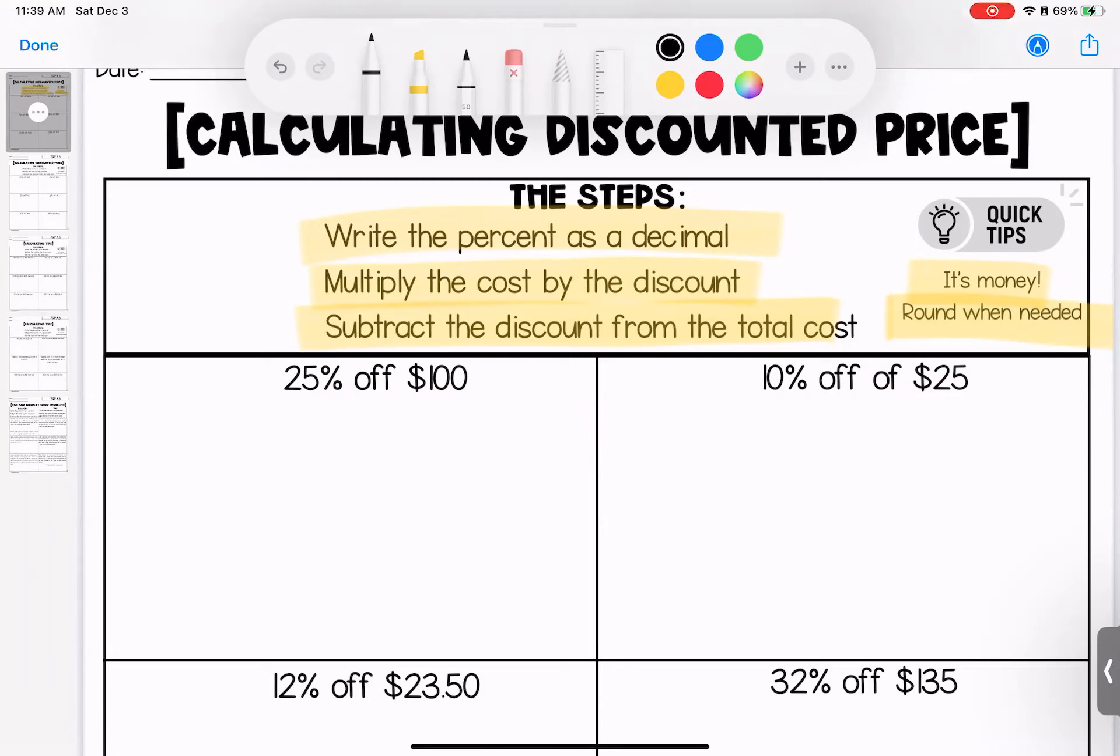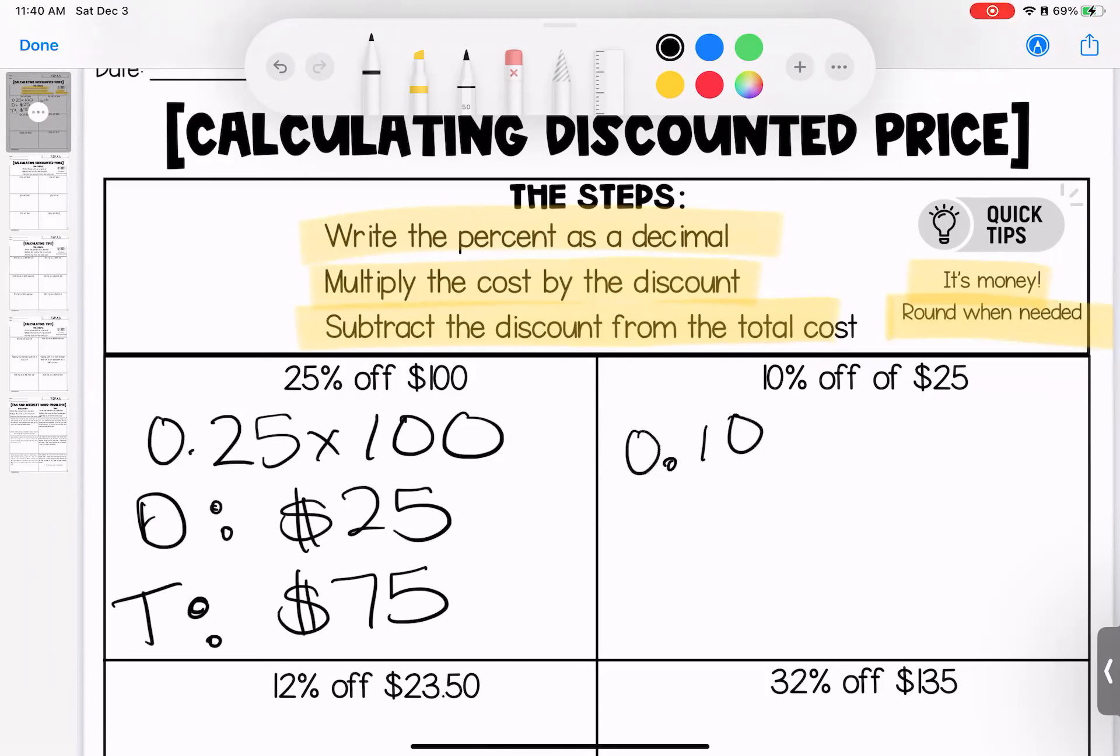For this one, we're doing 25% off of $100. 25% as a decimal would look like 0.25, so I'm multiplying that by 100. My discount is $25, which means the total price that we pay is $75. For 10% of $25, our discount is going to be $2.50. The total that we pay is $22.50.